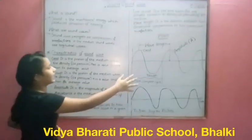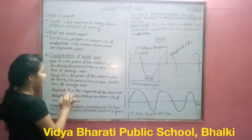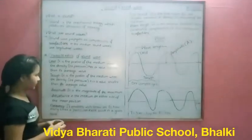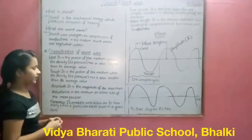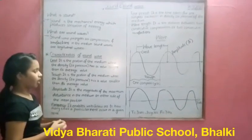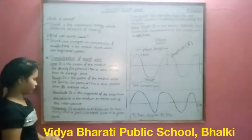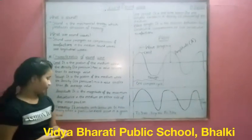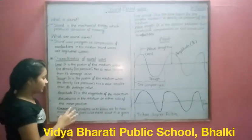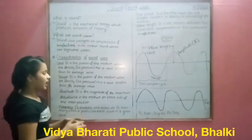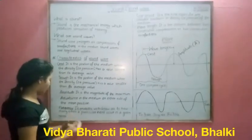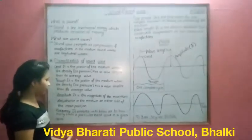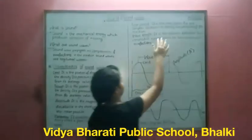Amplitude: it is denoted by A. It is the magnitude of the maximum disturbance in the medium on either side of the mean position. Frequency: it is denoted by F. It enables us to know how many times a particular event occurs in a given time.